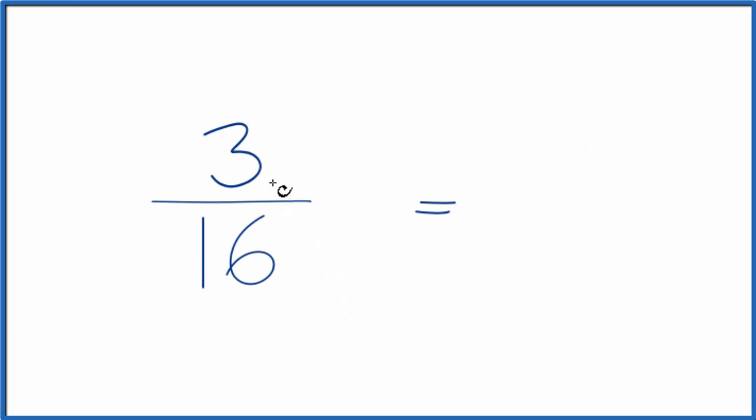We could multiply 3 over 16 times 1. That would just give us 3 over 16. What if we multiply it by 2 over 2? Because 2 over 2, 2 divided by 2 is 1, so again we're multiplying by 1. We're not going to change the value. But now, 3 times 2 is 6, and 16 times 2 is 32.